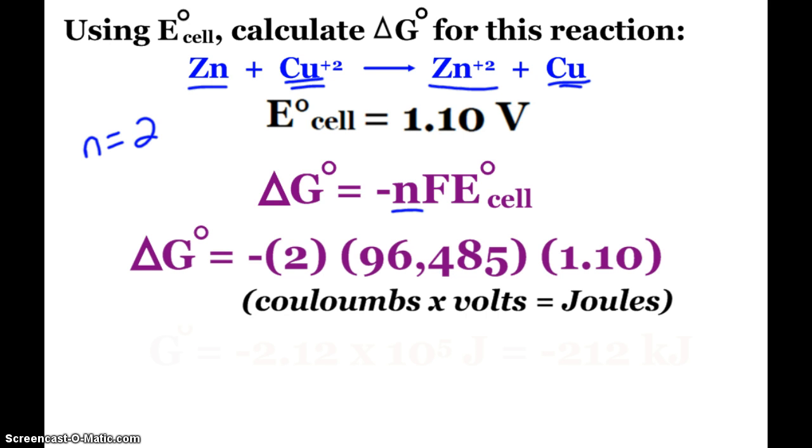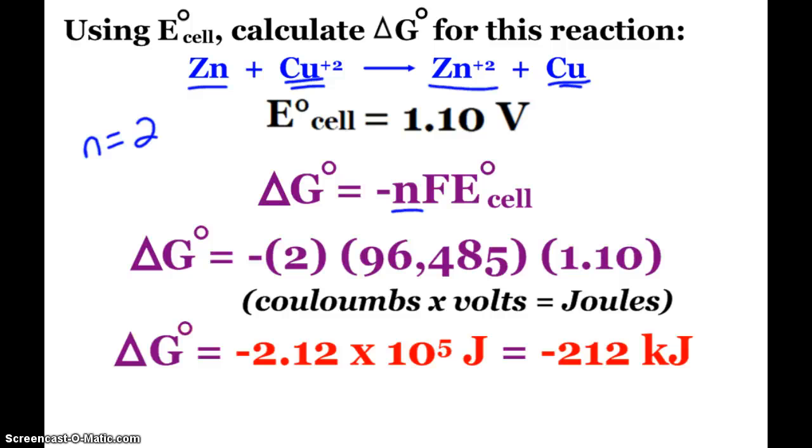When I plug those numbers in, my Faraday constant is Coulombs per mole, so when I take moles times that, the moles cancel out. What you end up having is Coulombs times volts in unit land is equal to joules.